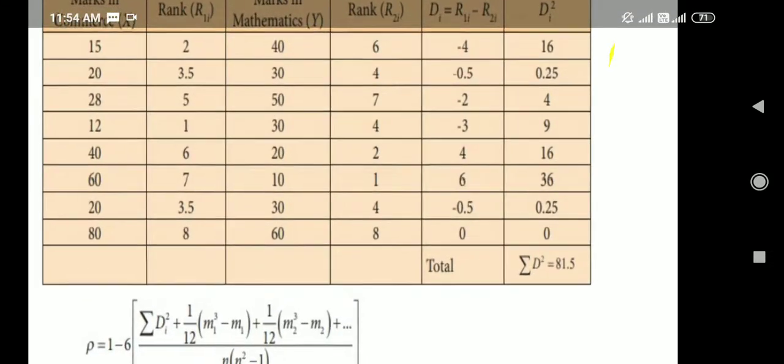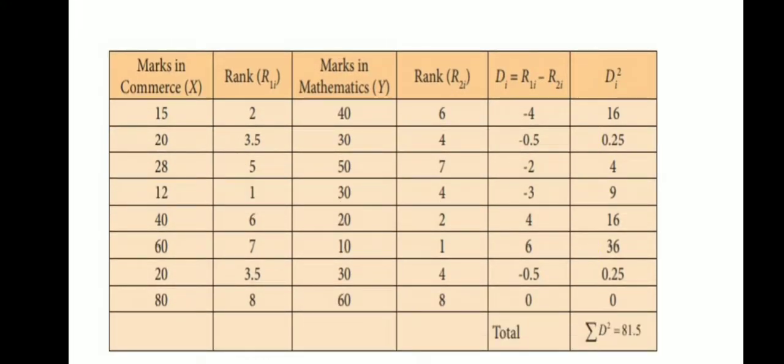For marks in Commerce, the ranking is as follows: 12 gets rank 1, 15 gets rank 2. For 20, which is repeated twice, the ranks would be 3 and 4, so take the average: (3 plus 4) divided by 2 equals 3.5. Assign rank 3.5 to each occurrence of 20. Then 40 gets rank 5, wait — 8 is rank 5, 40 is rank 6, 60 is rank 7, and 80 is rank 8.